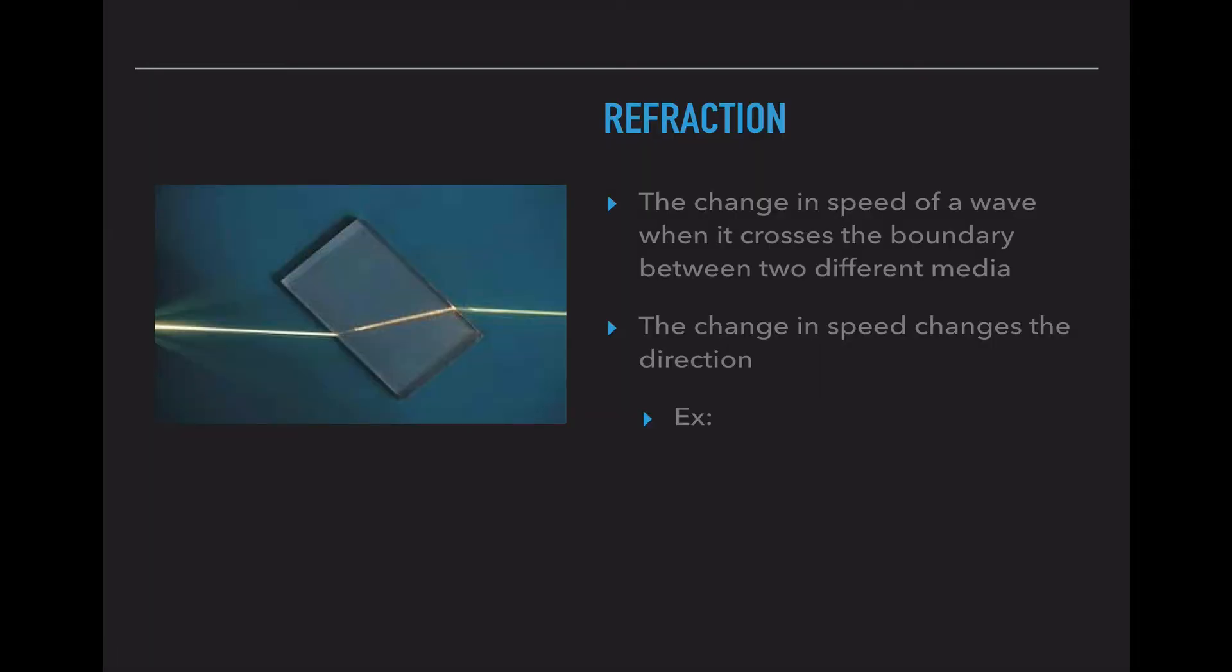The next one is refraction and it sounds really similar but it's not. In refraction, a wave changes medium. So that means that it's going through one object and then it enters a second object, and it actually changes the speed and possibly the direction of the wave. In this photograph, the light ray is coming in this direction. It's hitting this prism or this block and bending because it's slowing down.